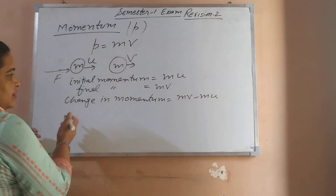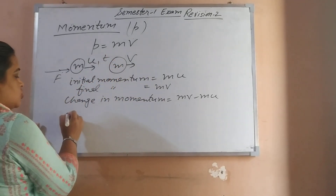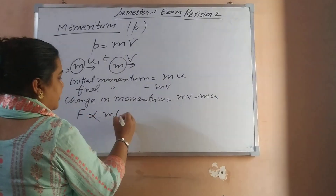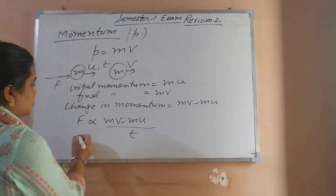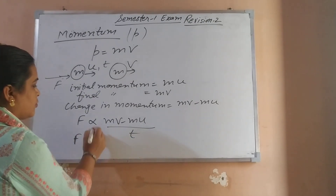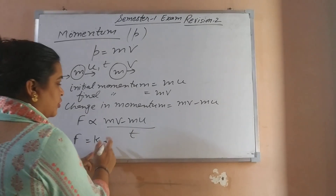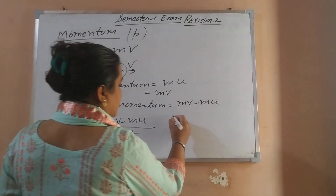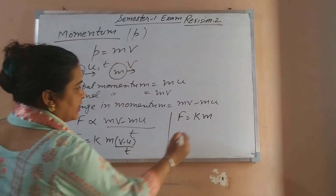This force is applied for time duration T. According to the statement, force is directly proportional to the rate of change of momentum. To convert proportionality to equality, we put a constant K. So F = K × M × (V−U)/T. The quantity (V−U)/T is acceleration, so F = KMA. Setting K as a unit constant gives us F = MA.